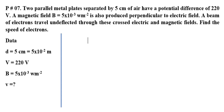अब हम क्यारे हैं कि एक beam of electrons हम उसमें से गुजार रहे हैं तो वो undeflected रहता है. आप यह बताएं कि उन electrons की speed क्या होगी. यह हमने वो सारी data लिख दी कि यह है हमारे पास separation between plates, voltage है, magnetic field है.